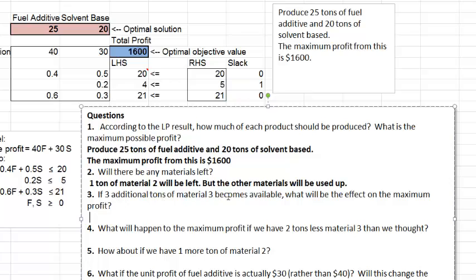The third question, if three additional tons of material three becomes available, what will be the effect on the maximum profit? Three additional tons of material three, so available amount is increased by three. The available amount now is 21, so this number now becomes 24, and we want to see the effect of that change. Well, let's think, if you have more resources than before, then usually you are better off. More resources means you could make more of your product with those additional resources, which leads to higher profits.